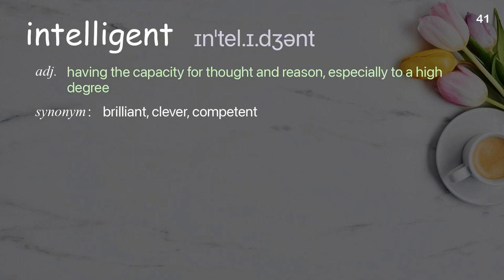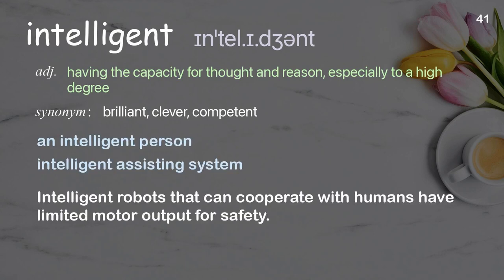Intelligent: having the capacity for thought and reason, especially to a high degree. Examples: an intelligent person, intelligent assisting system. Intelligent robots that can cooperate with humans have limited motor output for safety.